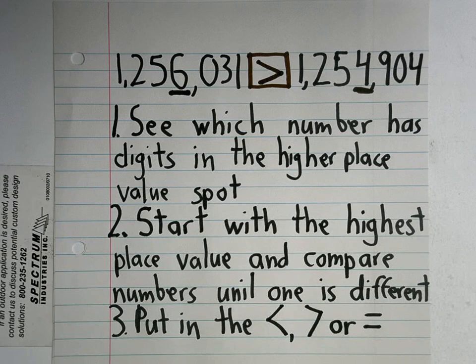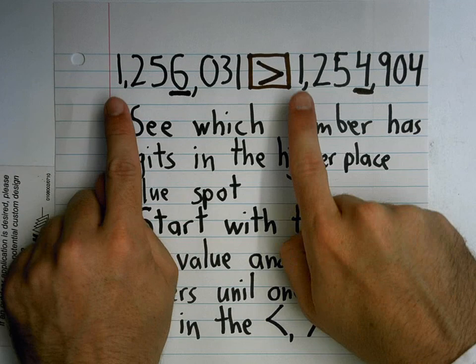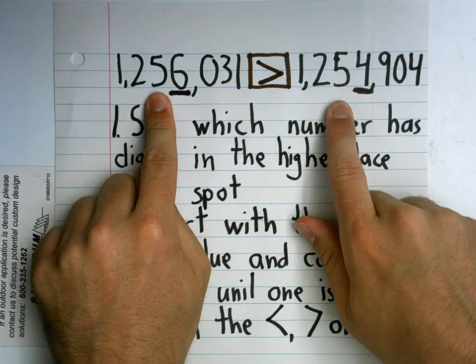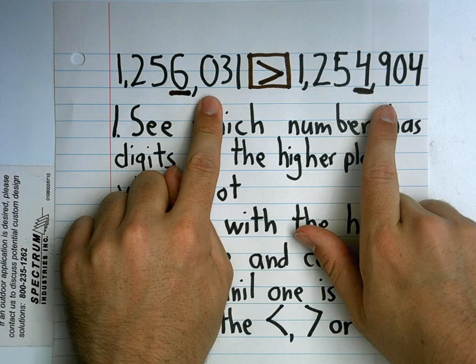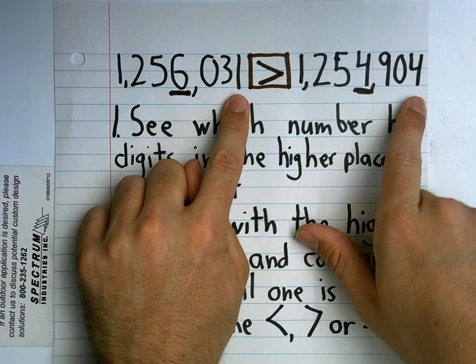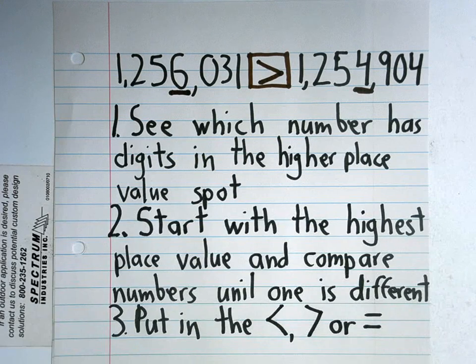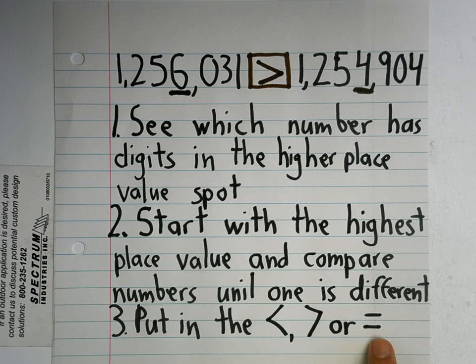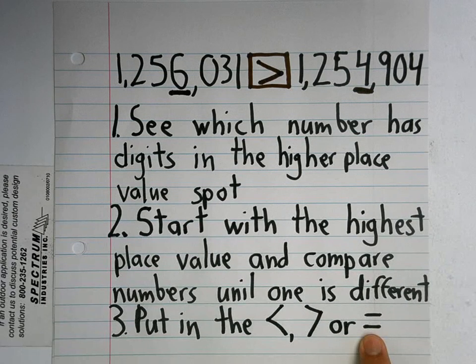Who could tell me what would happen if we checked the millions, the hundred thousands, the ten thousands, the thousands, the hundreds, the tens and the ones, and there was nothing different on any of those digits? What sign would go in the box? Equal to - yeah, the two lines. Equal to. Alright.